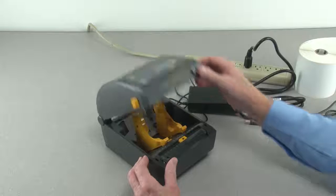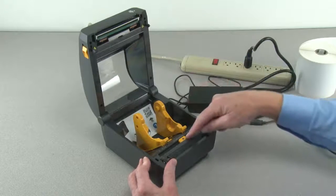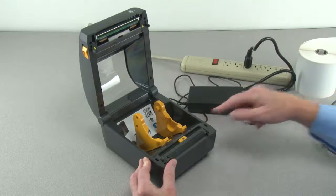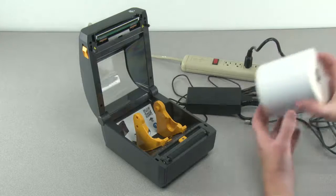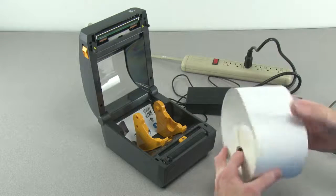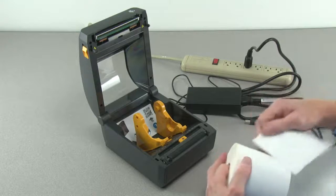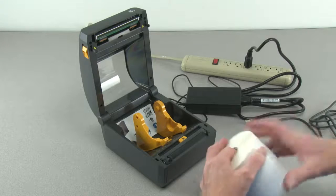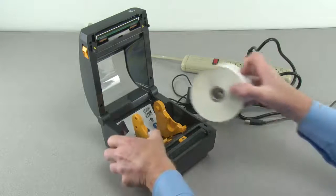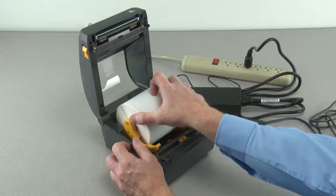Open the printer and verify the media sensors are in the correct location for your media. Prepare your supply media. Remove the outside wrap of the media roll to prevent contamination. Place the supply media in the roll holders and pull the end of the media out the front of the printer.